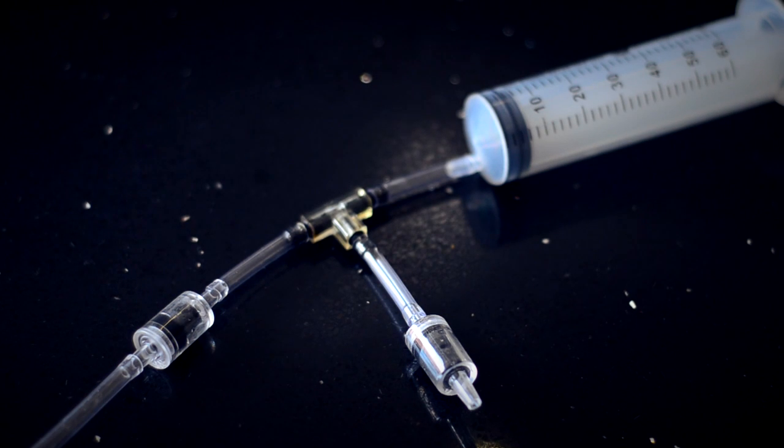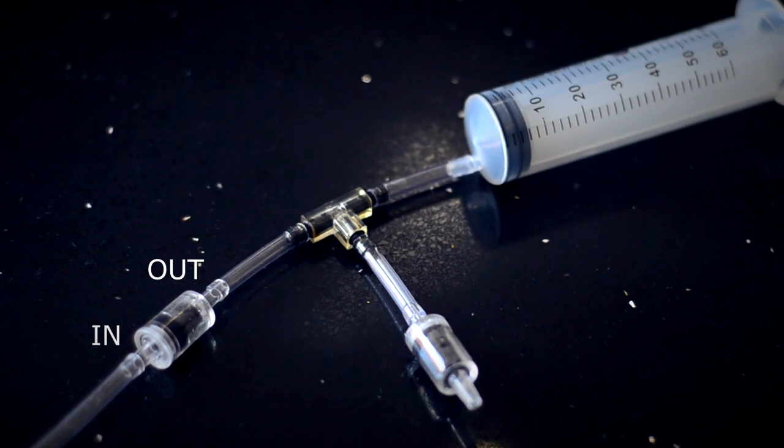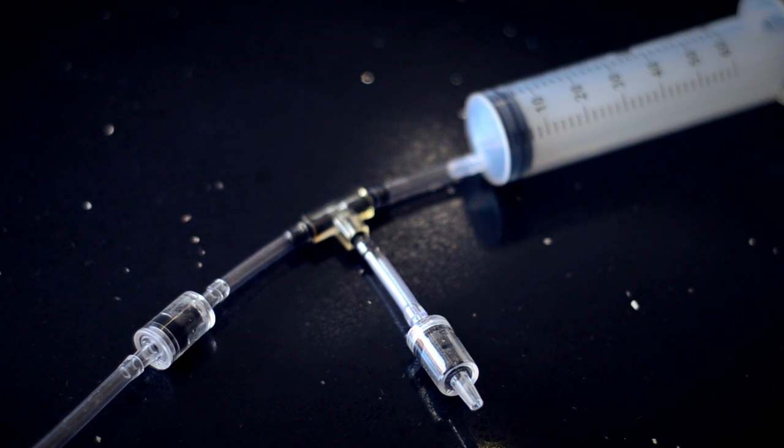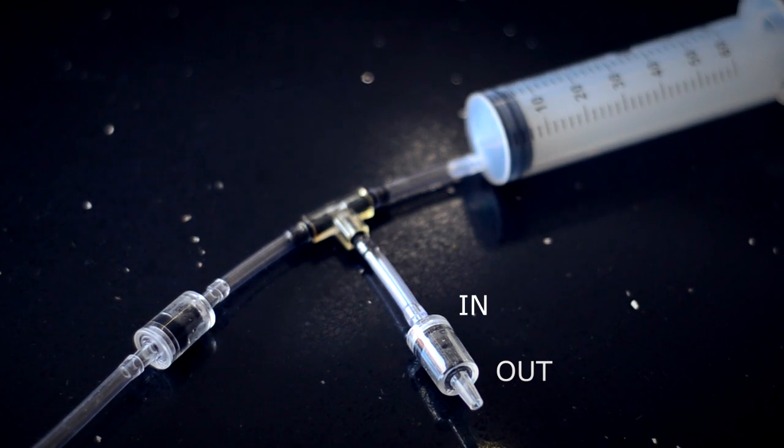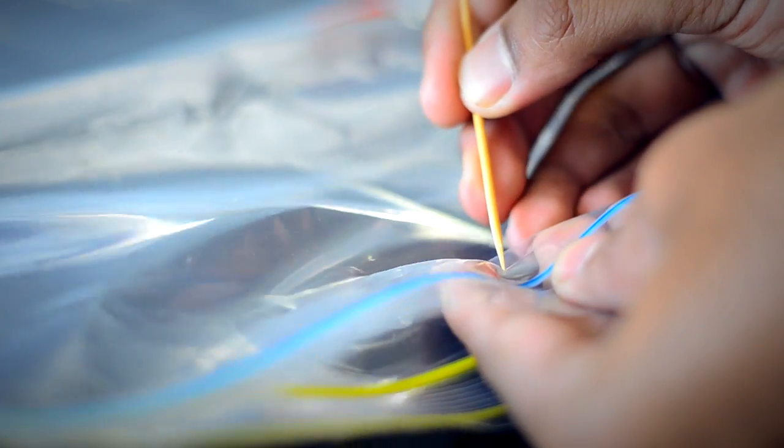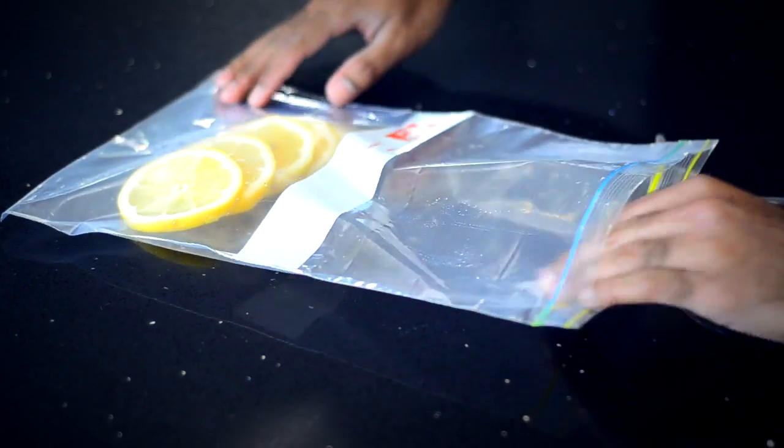Your completed vacuum sealer should look like this. So let's put it to the test. Grab a Ziploc bag and pierce one side with a toothpick, and then place the items you want to seal into the bag.